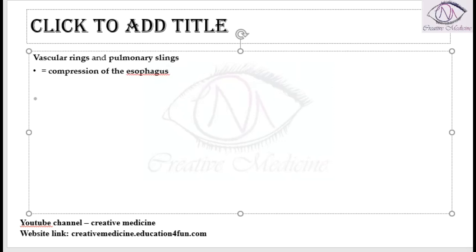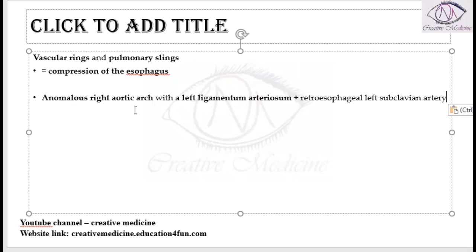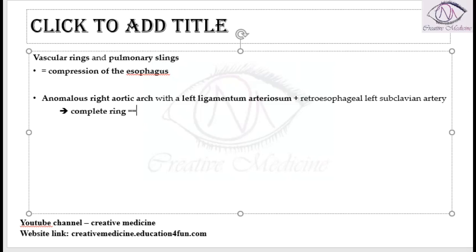Another cause is an anomalous right aortic arch with left ligamentum arteriosum, along with a retroesophageal left subclavian artery — that is, the left subclavian artery is present behind the esophagus. All of these together result in a complete vascular ring, which compresses the esophagus and causes posterior esophageal compression.